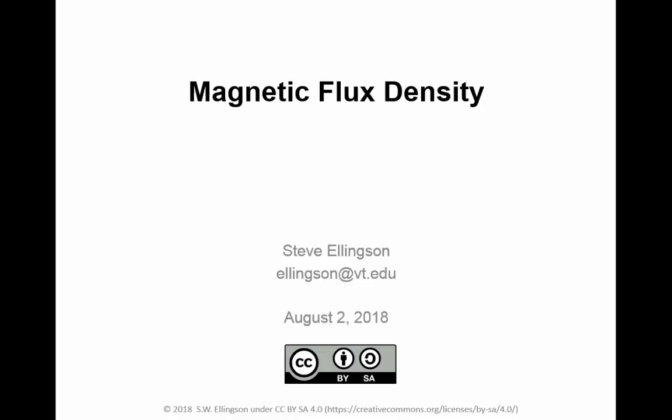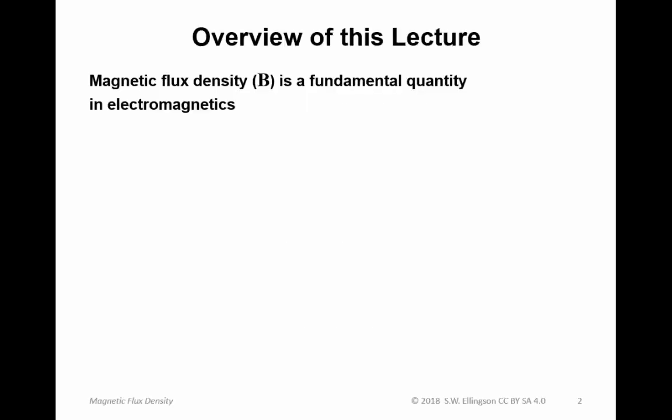Hello and welcome to a lecture on magnetic flux density. My name is Steve Ellingson. The magnetic flux density, which we assign the symbol B — boldface B, indicating that it is a vector — is a fundamental quantity in electromagnetics.